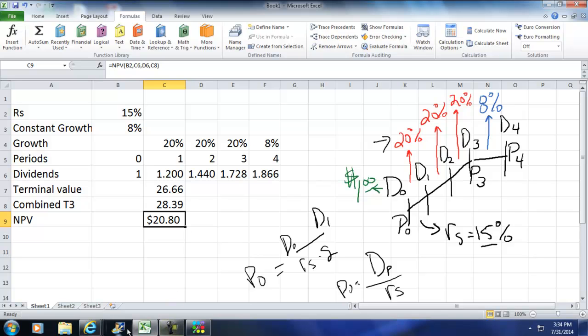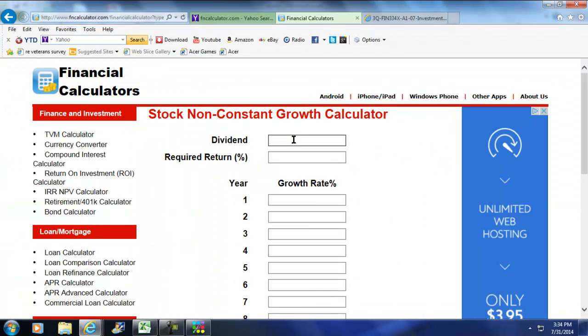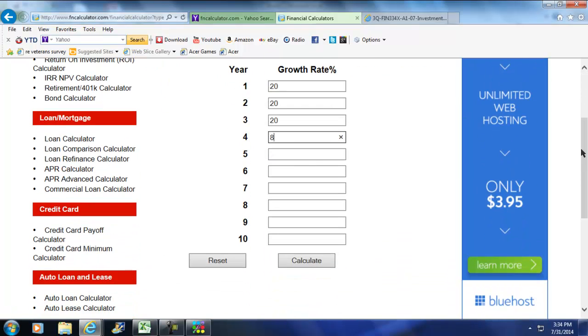I'm going to go into my FN Calculator, I already opened it up right here, and we said the dividend was $1, that was D0, and we said the required rate of return was 15%, and we gave a 20% growth rate for year one, a 20% growth rate for two, a 20 for three, and then finally for four, we hit eight percent, and if I come down here and hit calculate, I hope I get my $20.80, and there we do.